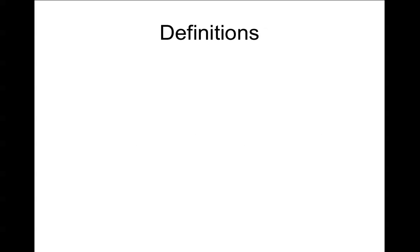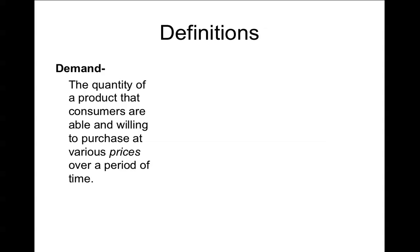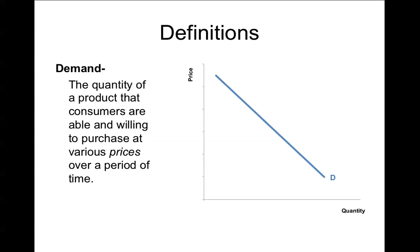The first definition we need is demand. Demand is the quantity of a product that consumers are able and willing to purchase at various prices over a period of time. The emphasis is on prices because demand shows how much people are able and willing to buy at any given price, which is why it's a relationship that can be drawn as a downward sloping curve.